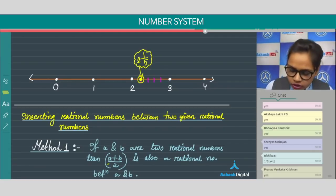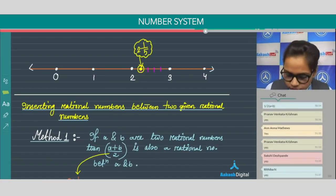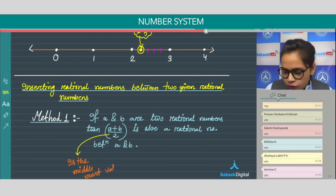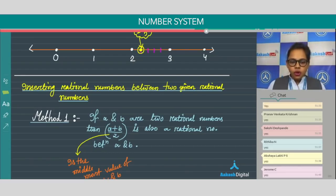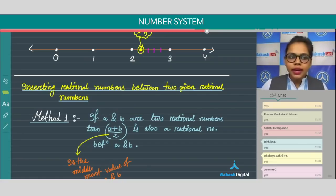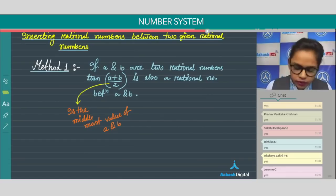This value (a + b) / 2 is the middle-most value of a and b. If I plot a point (a + b) / 2 on a number line between a and b, this is the middle-most value of a and b.